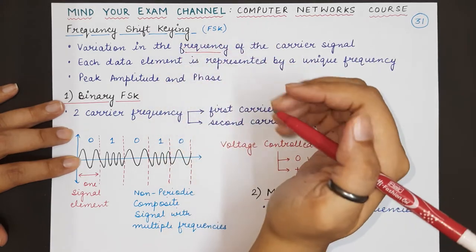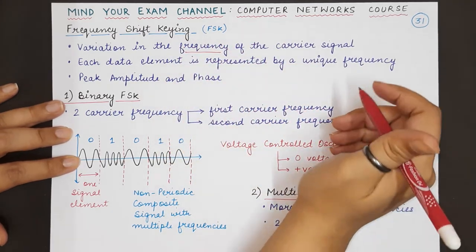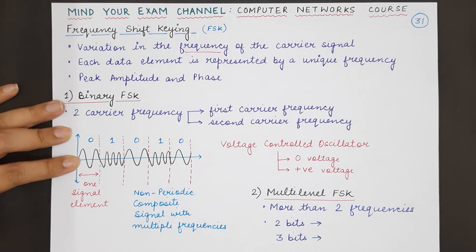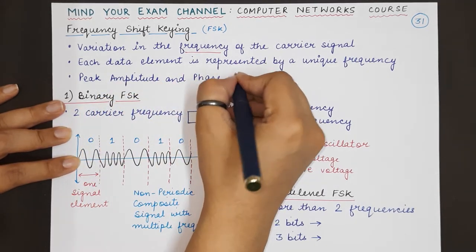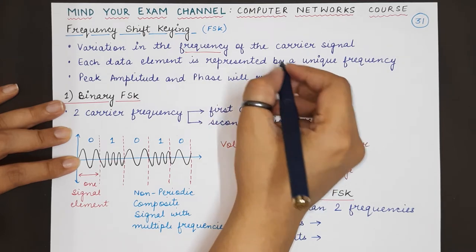Each data element will be represented by a unique frequency in the final signal that will be transmitted. Another important point is that the peak amplitude and phase will remain constant for the carrier signal.